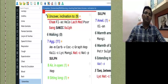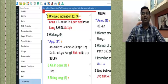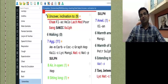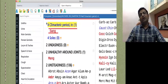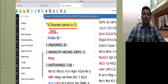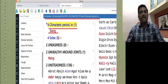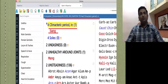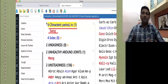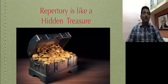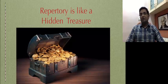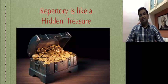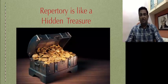In many female patients, such symptoms are found in the climacteric age. So in the same section, you find the rubric: Feet — Uncover — Inclination to — in climacteric period. Only Sanguinaria is the medicine. So repertory is like a hidden treasure. If you know the repertory, many times while studying a drug in Materia Medica we are unaware of certain aspects of the drug, which come as a surprise when we find them in the repertory.